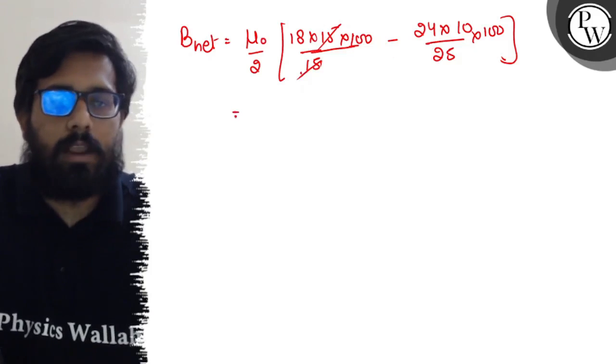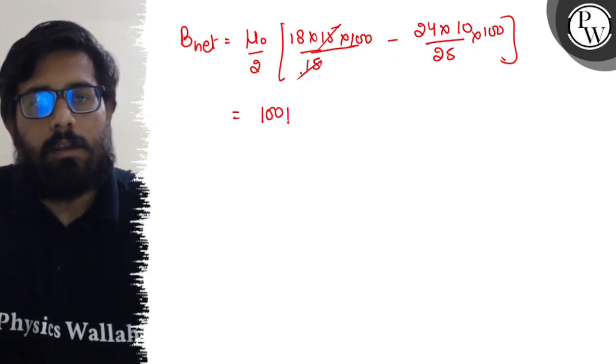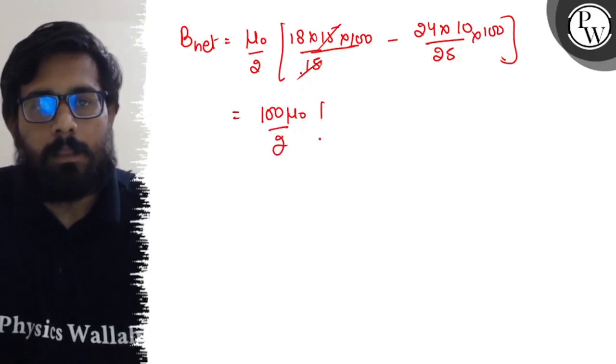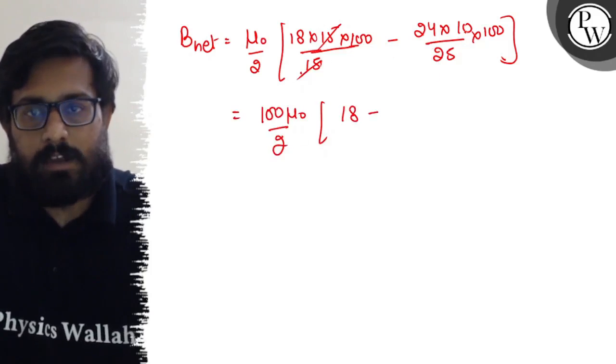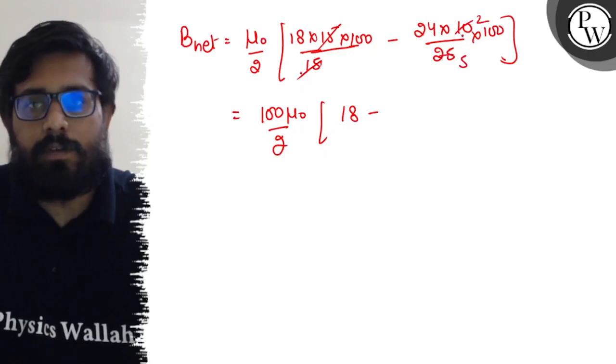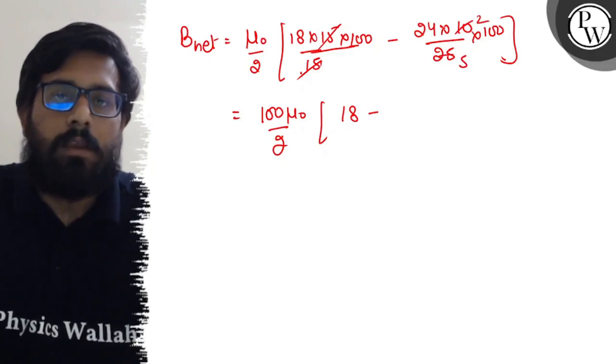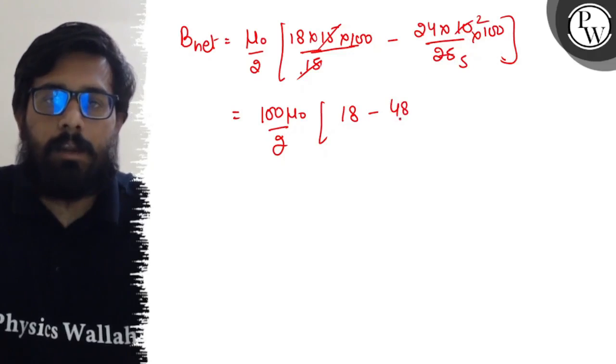Taking out the hundred common from the two. So this can be written as 18 minus, and 24 into 2 comes out to be 48 by 5.